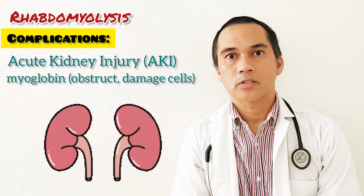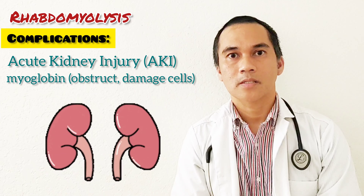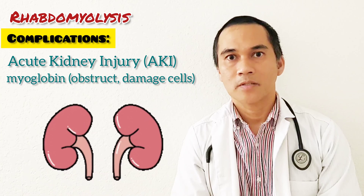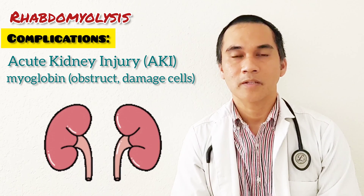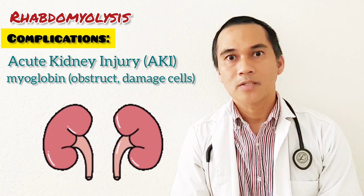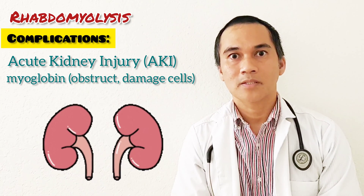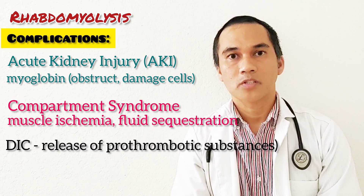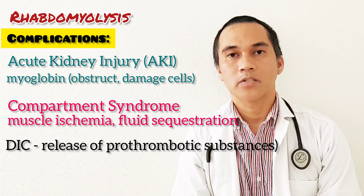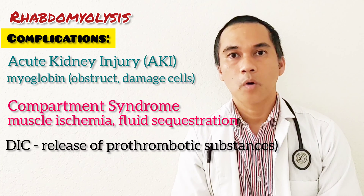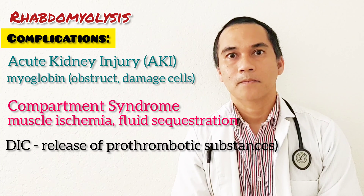The complications of rhabdomyolysis include: number one, acute kidney injury, because muscle fibers and other components released from dead muscles — such as myoglobin — can obstruct and damage kidney cells. Another complication is compartment syndrome, and also disseminated intravascular coagulation (DIC) due to the release of prothrombotic substances.